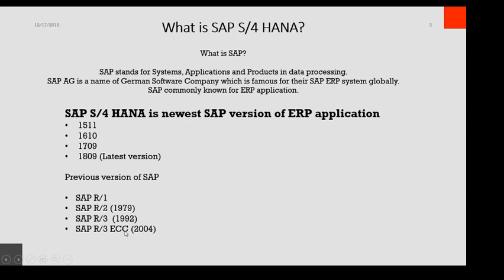SAP has come out with newer versions of software available in the market. The latest version right now is called SAP S4 HANA. The latest release is 1809, and 1709 before that. From 1511 and 1610 onwards, all of those are SAP S4 HANA versions.